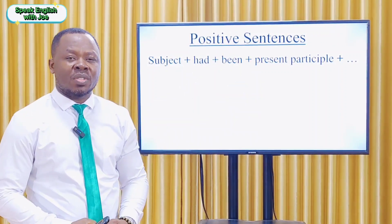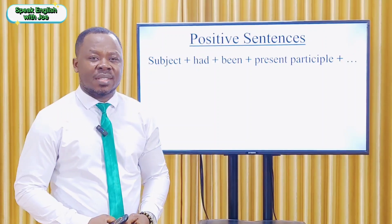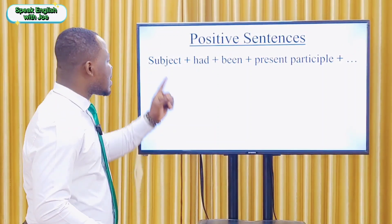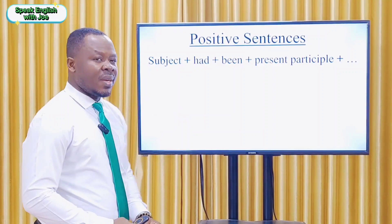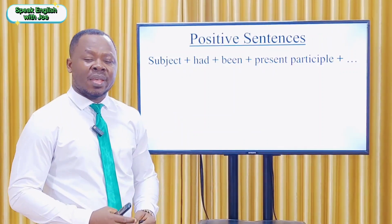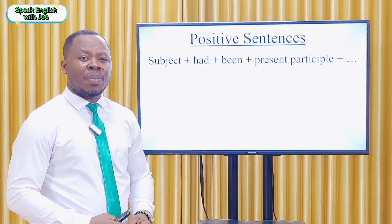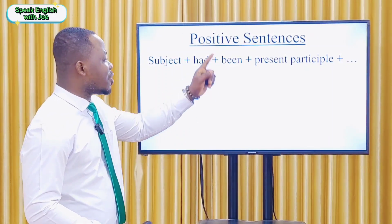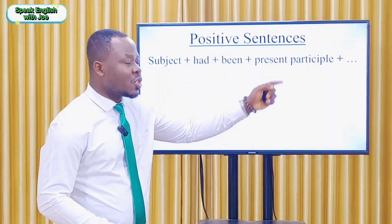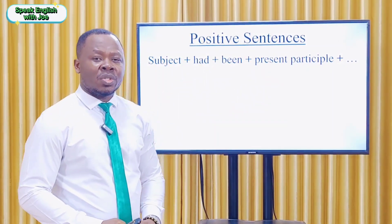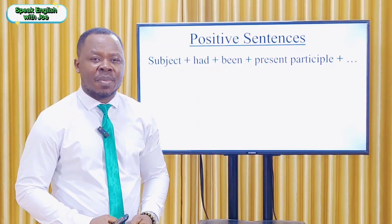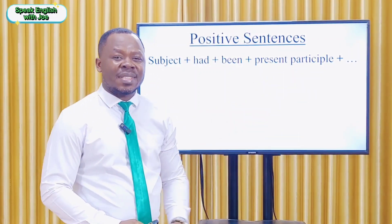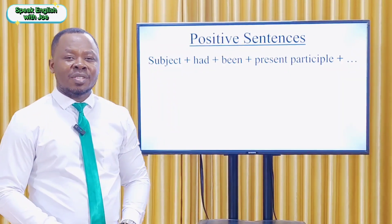This is how the affirmative form looks: we have the subject — that is I, you, we, they, he, she, and it — plus two helping verbs, that is 'had' plus 'been', plus the present participle (also known as the main verb plus -ing), and plus the rest of the sentence.